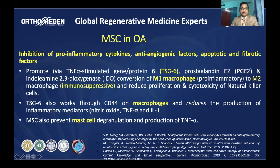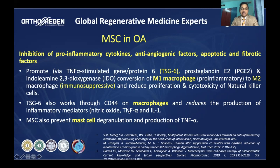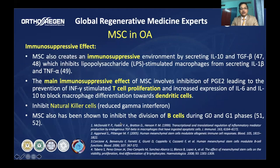Stem cells help osteoarthritis by inhibiting pro-inflammatory cytokines and other endogenic factors. They produce TSG-6 (tumor necrosis factor alpha-stimulated gene 6 protein), prostaglandin E2, and IDO. They allow conversion of M1 macrophages (pro-inflammatory) to M2 (immunosuppressive), reduce the proliferation of natural killer cells, prevent release of inflammatory markers from macrophages like nitric oxide, TNF-alpha, and interleukin-1, and also prevent mast cell degradation — acting on all cells involved in innate immunity.